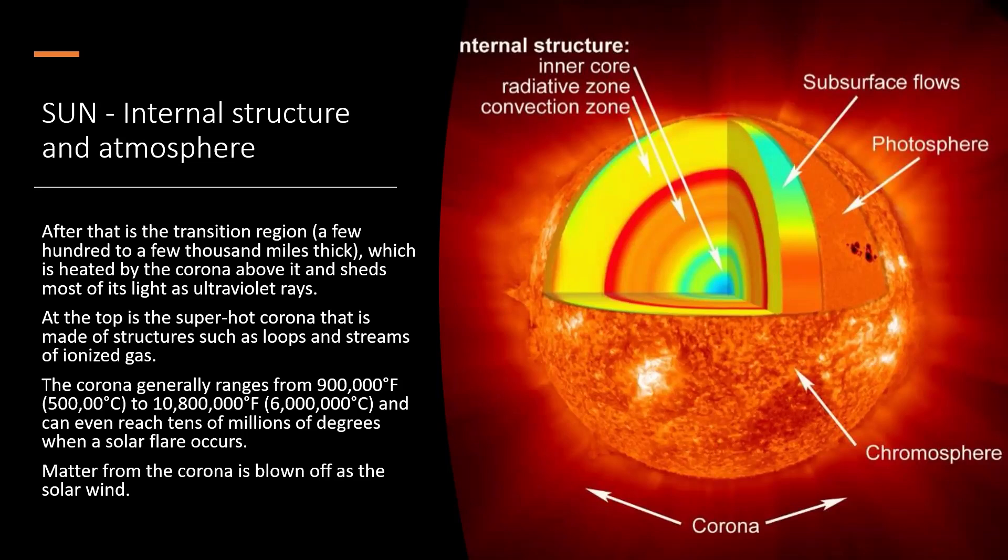Matter from the corona is blown off as solar wind. So we go from temperatures that are millions of degrees from the core, then we go to cooler and cooler layers, and now we're back up to millions of degrees in the corona. So there's a gradation of temperatures from the inside to the outside.